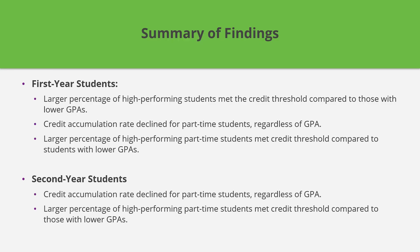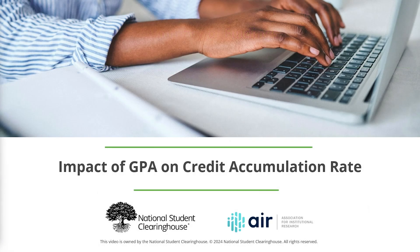If you know the characteristics of low-performing students who are less likely to meet credit thresholds, you can share that information with units like Academic Advising and Tutoring Services, so they can better support this population of students. As you explore your institution's PDP dashboards, think about how the data can best be used to support your students. Thank you for joining us.